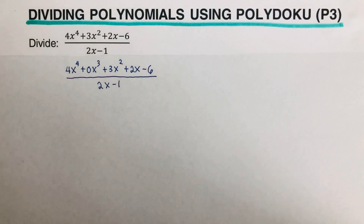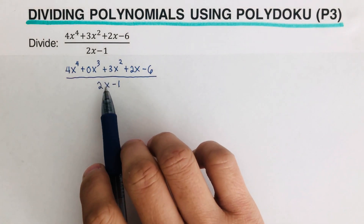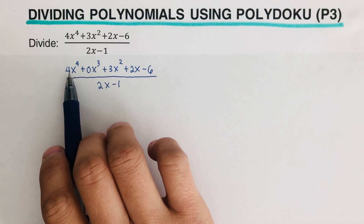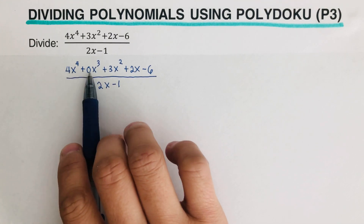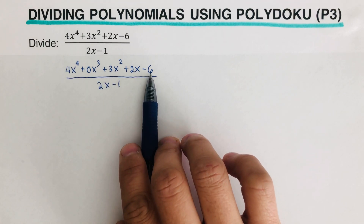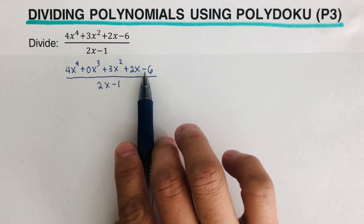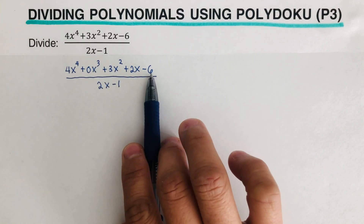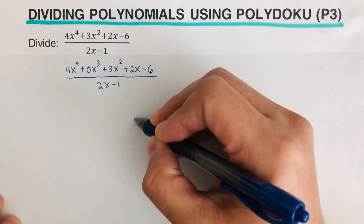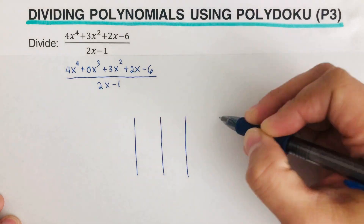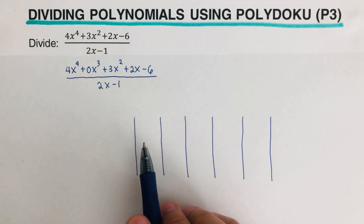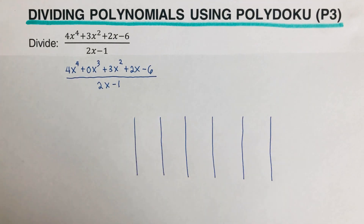Now we are going to divide these two expressions using polydoku. To set up the table, we count the number of terms in the numerator: 1, 2, 3, 4, and 5. So I am going to create six vertical lines — you count the terms and add one to get the number of vertical lines. So I'll create six vertical lines.